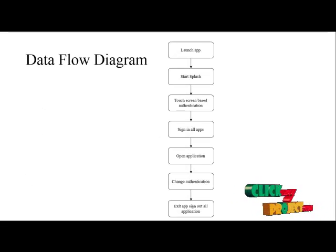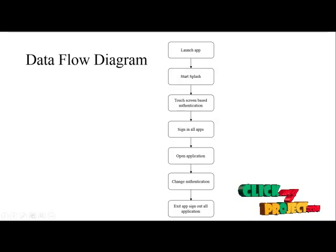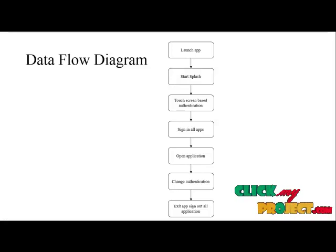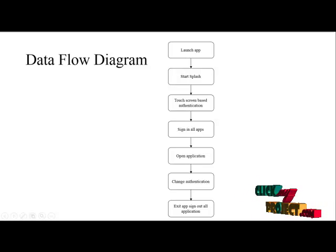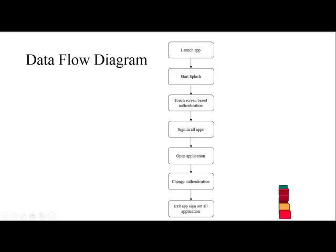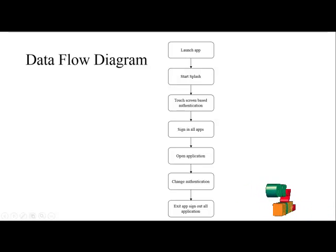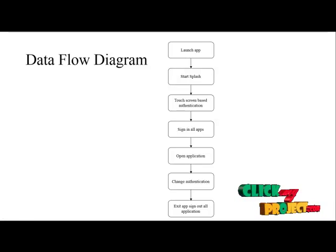This is our data flow diagram of our Android application. First, we have to launch the application in our mobile or the emulator. We have to launch the APK file in the mobile or emulator which is in the system or mobile. Then, start splash screen. The splash screen is nothing but the welcome screen of an application. The splash screen has some animated things and we show our application title and also show the logo of our application.